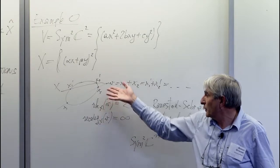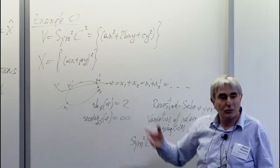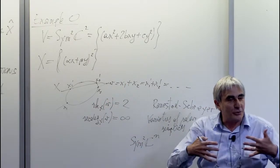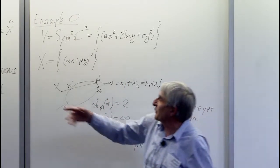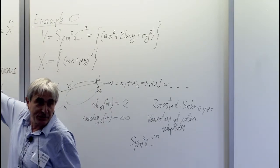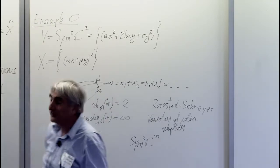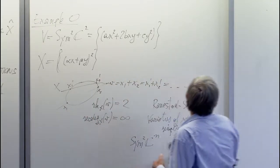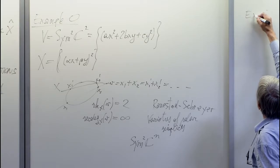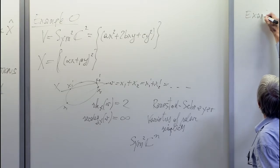Let me quote a very nice paper by Ranestad and Schreier called 'Varieties of Polar Simplicies,' where they study precisely all the possible decompositions, generalizing this case to all quadrics Sym²(Cⁿ). In all cases the secant degree is always infinity, meaning the possible decompositions form a positive-dimensional variety. So these are not good for applications, because you can never detect the decomposition from V.